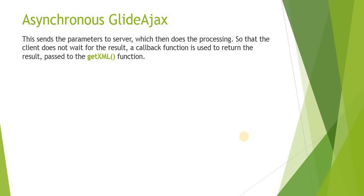There are two types of Glide Ajax. First is asynchronous and the second one is synchronous. Asynchronous sends parameters to the server which then does the processing so that the client does not wait for the result, and a callback function is used to return the results. The asynchronous Glide Ajax executes in the background — the front-end user won't notice anything running in the background and there will not be any hang state. For this we use a callback function which receives the output from the script include, and we use the getXML method.